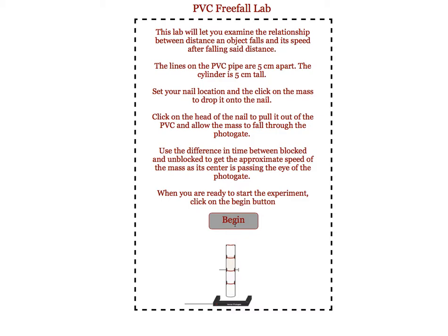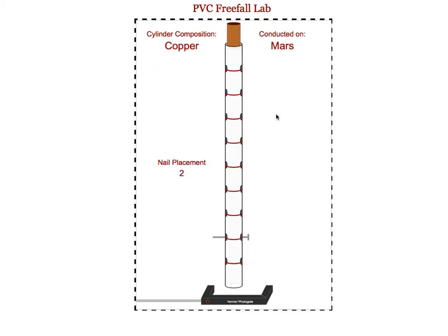When students click Begin, it will bring them to an experimental setup much like what they're going to use in real life, where we have a PVC pipe with holes drilled in it. The holes will allow students to put a nail that will then catch the mass when we drop it in there and hold the mass at a certain height above a photo gate.